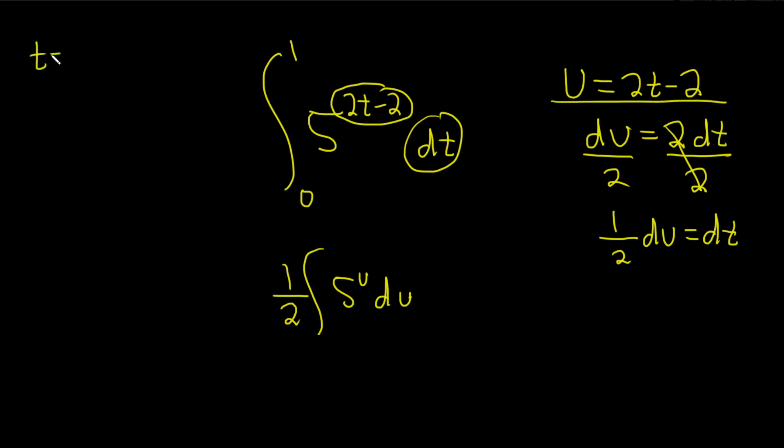So when t is equal to 1, we just basically take this and plug it in here. So we get u equals 2 times 1 minus 2. So we get 0. So this becomes a 0.